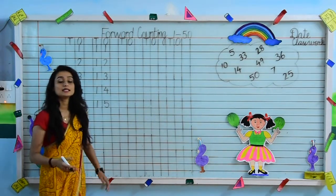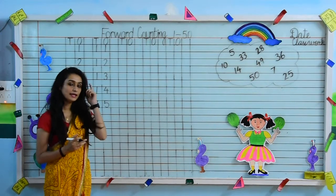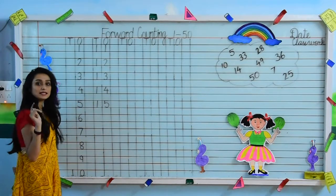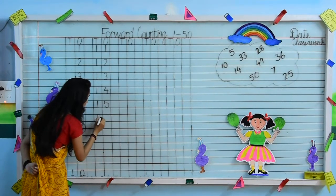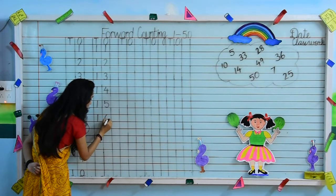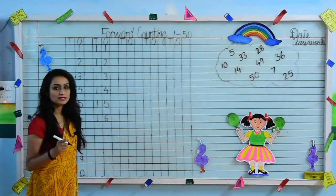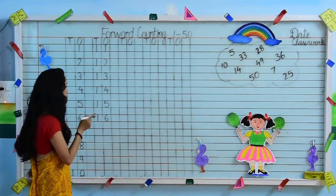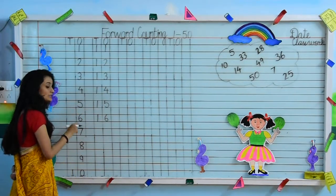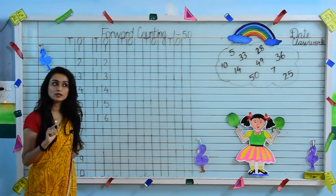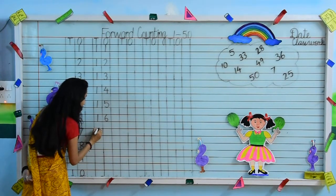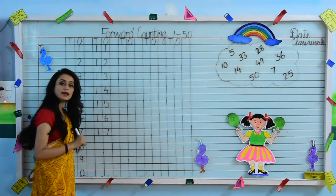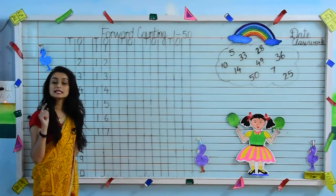After 15, tell me which number will come. Think fast. The next number is 1, 6 — 16. What comes after 6? After 6, 7 is the next number. So after 16, we write 1, 7 — 17. After 17, 1, 8 — 18 is the next number. 1 and 2 circles together makes 8.